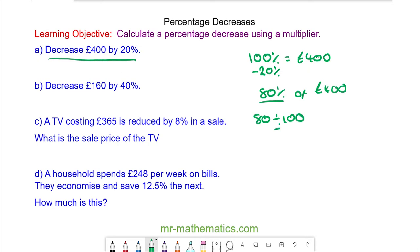Percentage means divide by 100, so we have 0.8, which means multiply by 400 pounds, and we get 320 pounds.